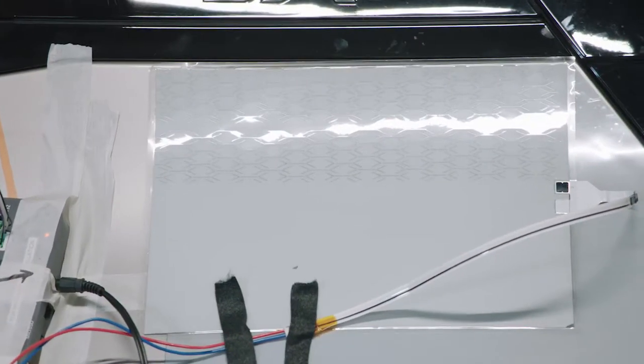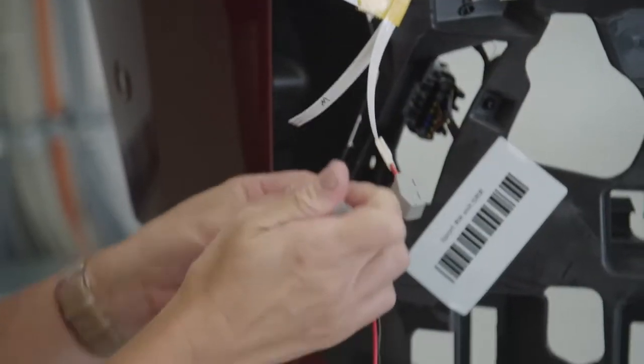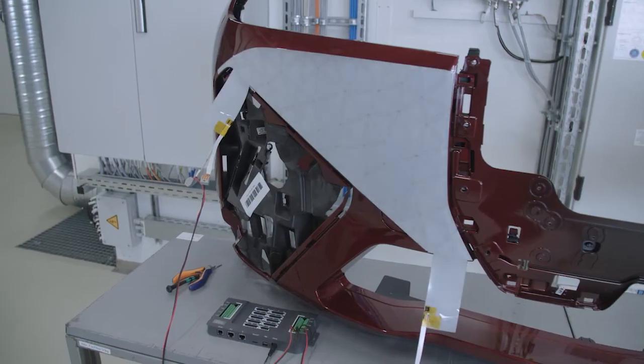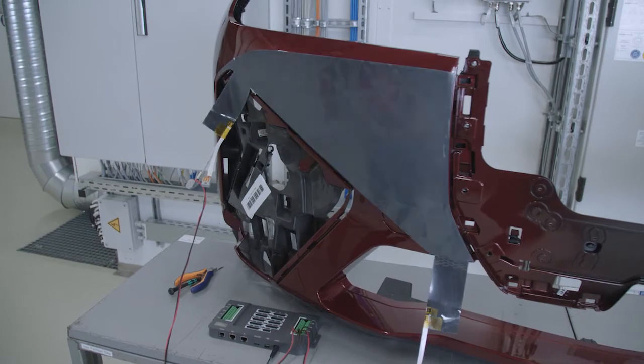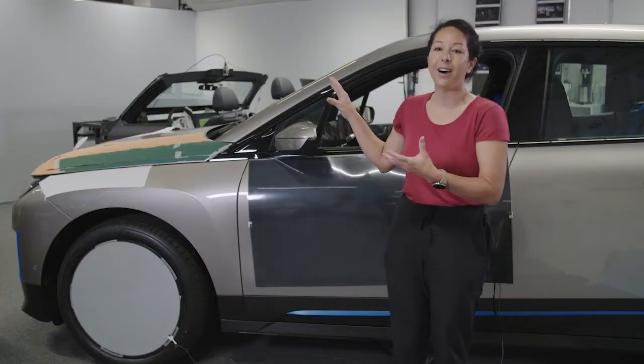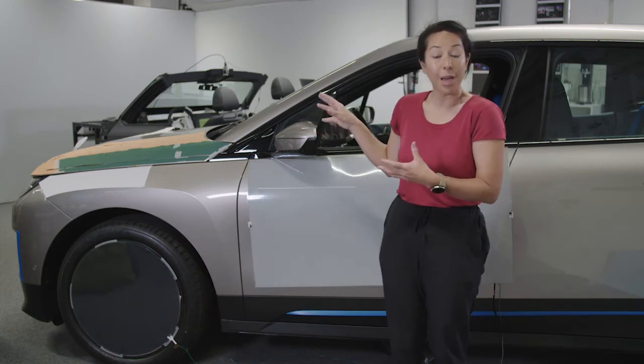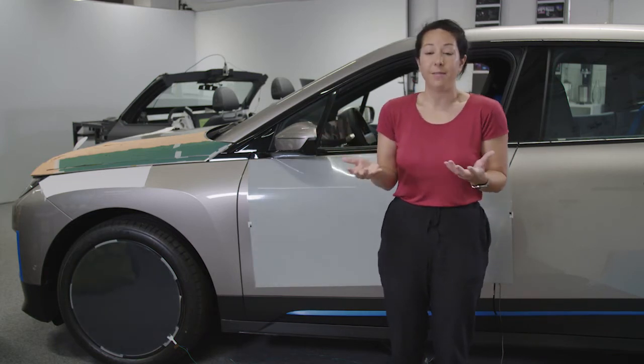The third use of E-ink in automotive is a functional use. Through color, we can control sunlight reflection and thermal properties. We can change the entire car to essentially support climate control and to save energy.